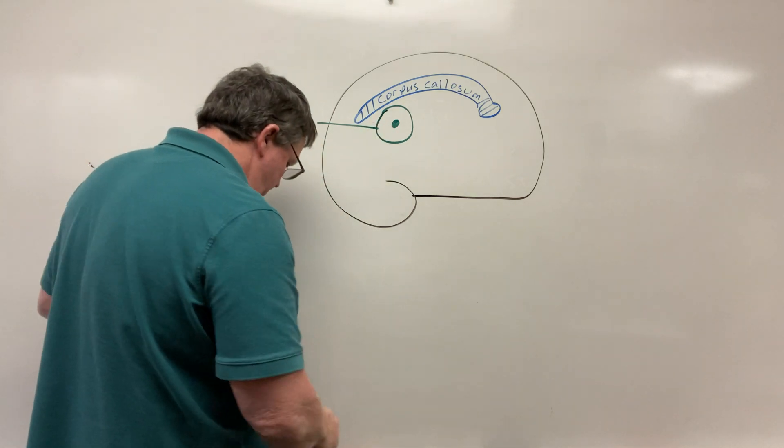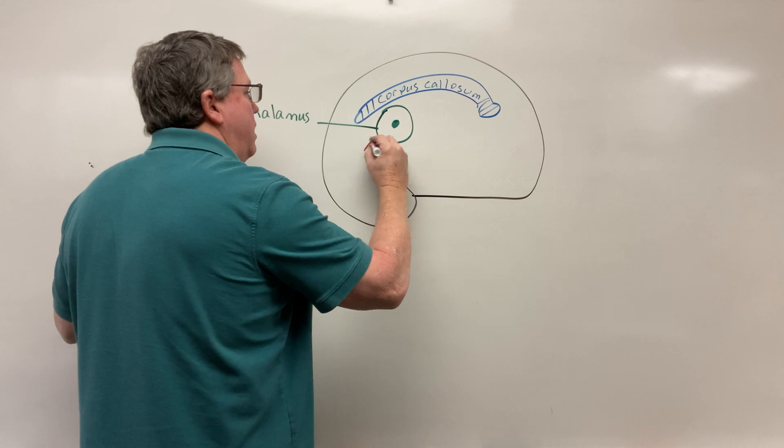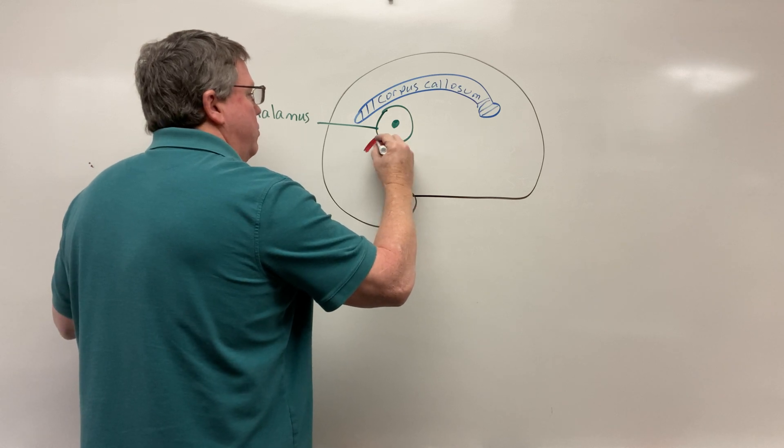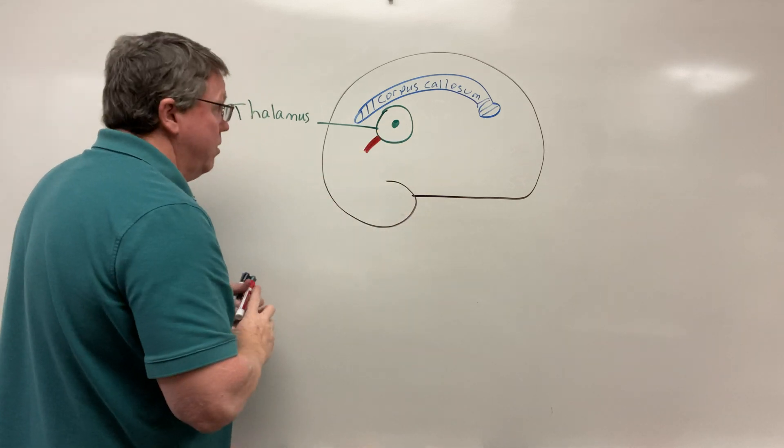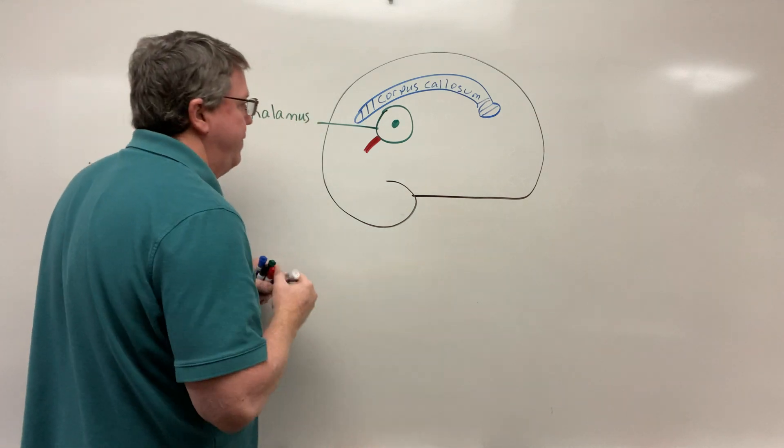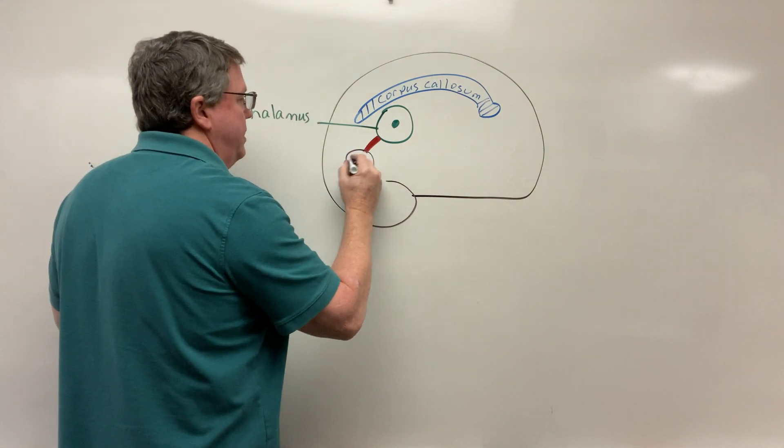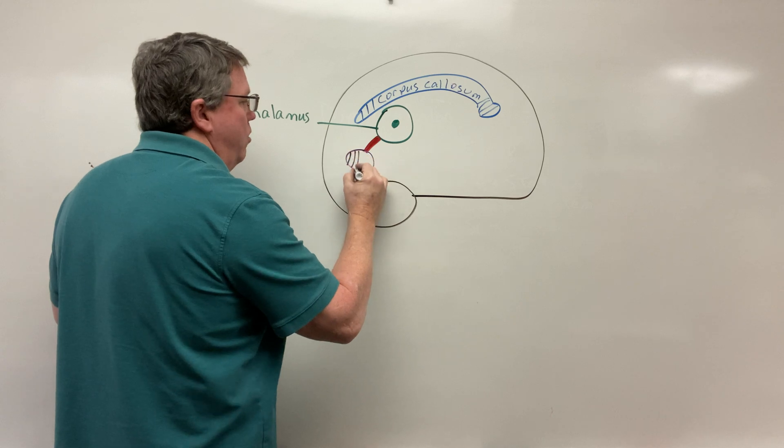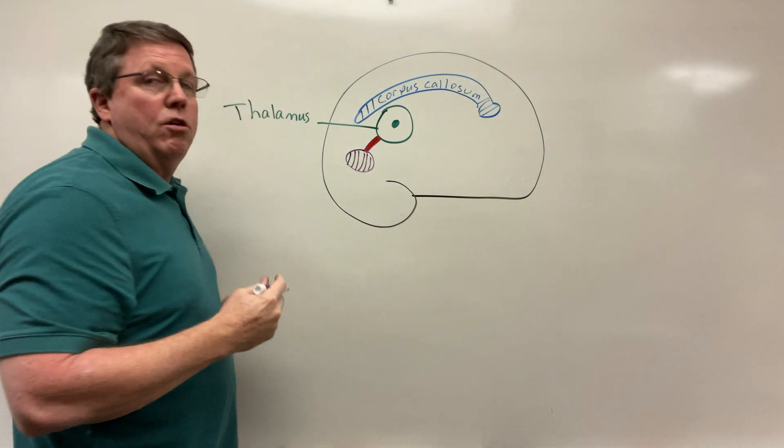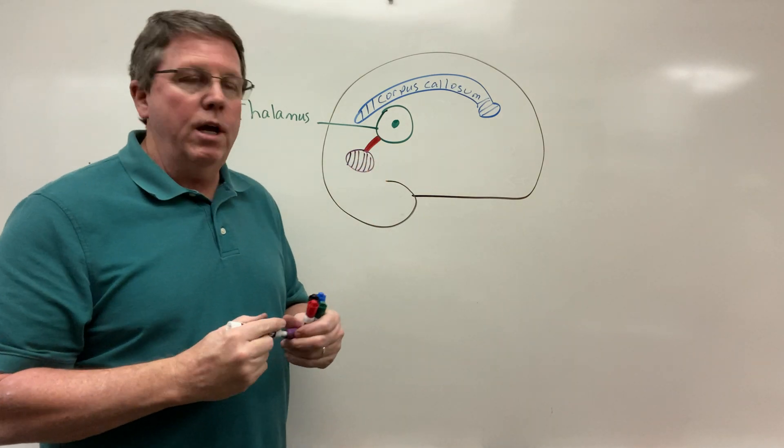And then coming off the back of the thalamus, we have a little structure here and we're going to have our pineal gland. The pineal gland is responsible for releasing melatonin, and melatonin is what helps you sleep.